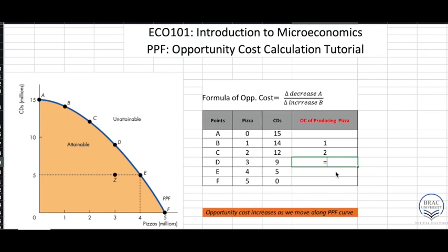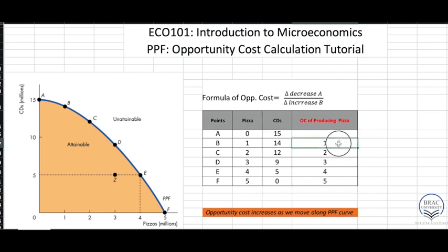Similarly, for the third calculation moving from C to D: 12 minus 9 divided by 3 minus 2, which equals 3. The remaining opportunity costs will be four and five respectively. I've done the first three for you, and you should be able to do the next two without much difficulty.